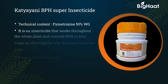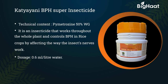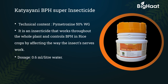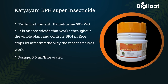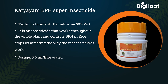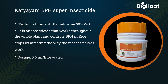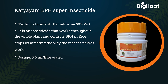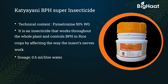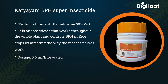Katyany BPH Super insecticide — its technical content is pymetrozine 50% WG. It is an insecticide that works throughout the whole plant and controls BPH in rice crops by affecting the way the insects' nerves work.